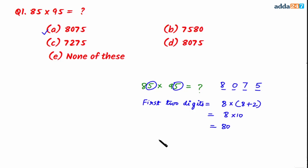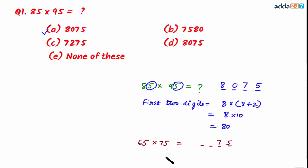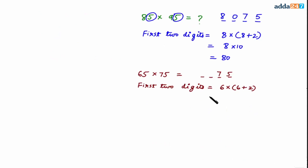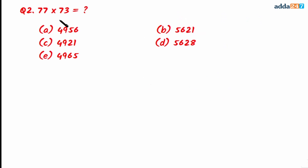For better understanding, let's take one more example: 65 multiplied by 75. Here also the digit at the units place is 5 and the difference between 75 and 65 is 10. The product will have four digits; the last two digits are fixed as 7 and 5. For the first two digits, we take 6 and multiply by 6 plus 2, giving 6 multiplied by 8, which equals 48. So the first two digits are 4 and 8, making the answer 4875.